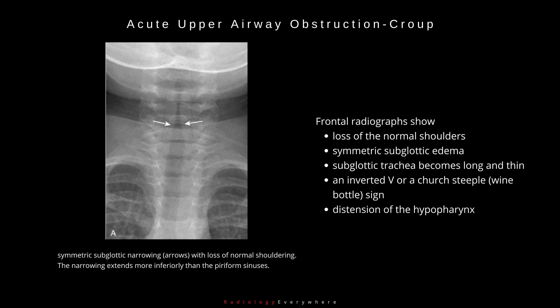Frontal radiographs show loss of the normal shoulders, lateral convexities, of the subglottic trachea secondary to symmetric subglottic edema. The subglottic trachea becomes long and thin, with the narrow portion extending more inferiorly than the level of the piriform sinuses, giving an inverted V, or a church steeple, wine bottle sign. Distention of the hypopharynx is also seen due to the patient's attempt at decreasing airway resistance.